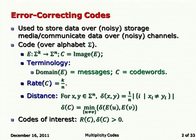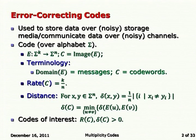If x and y are different, you do not ask how different they are — they are either equal or not equal at each coordinate. The minimum distance of a code, delta of C, is the minimum over all distinct messages of the distance between their encodings. This means an adversary who picks two different messages u and v can make the encoding of u look like the encoding of v by changing only a delta fraction of the symbols. In codes of interest we want the rate and the distance delta to both be bounded away from zero by some fixed constant.